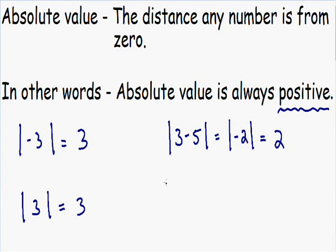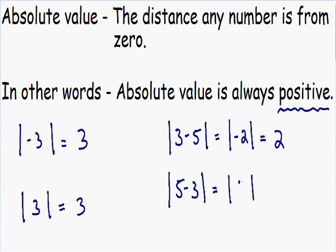Let's say we have the absolute value of 5 minus 3. Once again, let's simplify the inside of the absolute value first. 5 minus 3 is equal to 2, so we have the absolute value of positive 2. Absolute value always stays positive, so the absolute value of positive 2 stays positive 2. This is our solution.